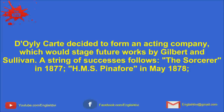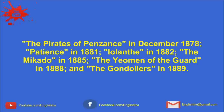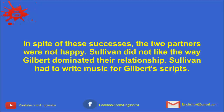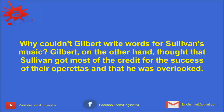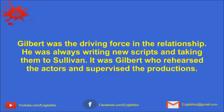Doily-Cartt decided to form an acting company, which would stage future works by Gilbert and Sullivan. A string of successes follows: The Sorcerer in 1877, H.M.S. Pinafore in May 1878, The Pirates of Penzance in December 1878, Patience in 1881, Iolanthe in 1882, The Mikado in 1885, The Yeoman of the Guard in 1888, and The Gondoliers in 1889. In spite of these successes, the two partners were not happy. Sullivan did not like the way Gilbert dominated their relationship. Sullivan had to write music for Gilbert's scripts. Gilbert, on the other hand, thought that Sullivan got the most of the credit for the success of their operettas and that he was overlooked. Gilbert was a driving force in the relationship. He was always writing new scripts and taking them to Sullivan. It was Gilbert who rehearsed the actors and supervised the productions.